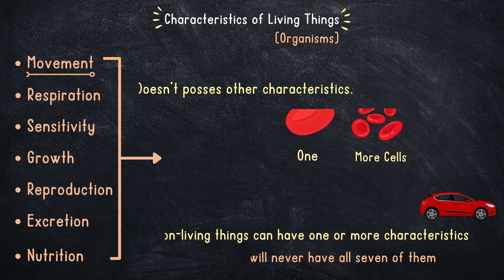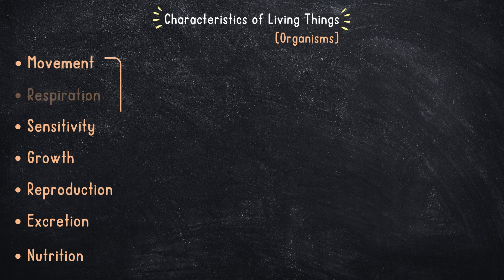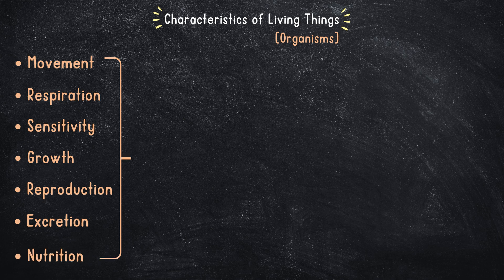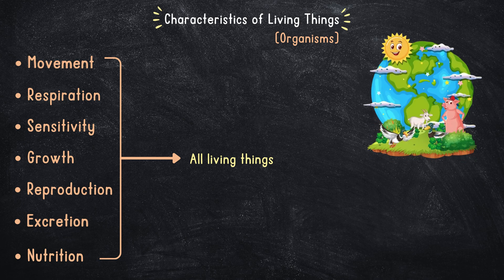So there you have it — movement, respiration, sensitivity, growth, reproduction, excretion, and nutrition are the seven characteristics that define all living things. Together, they create the fascinating tapestry of life on Earth.